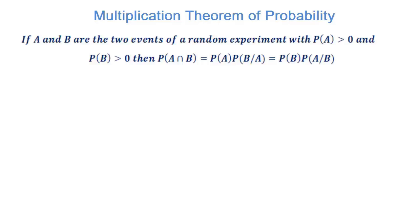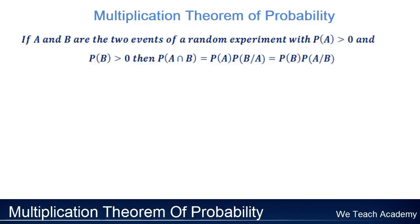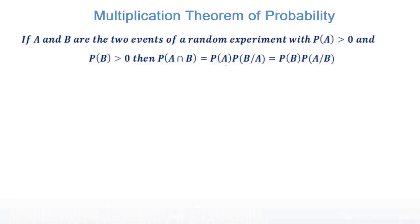Welcome back friends. Today in this presentation we are going to prove the multiplication theorem of probability. The statement of the theorem is: if A and B are two events of a random experiment with P(A) greater than 0 and P(B) greater than 0, then P(A intersection B) is